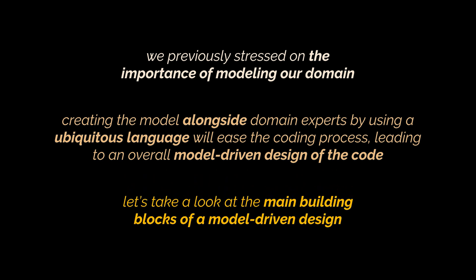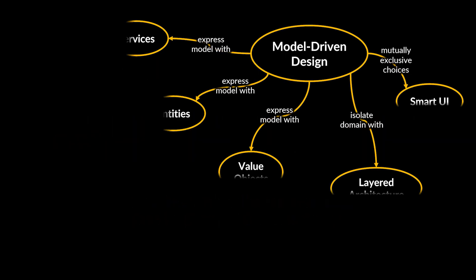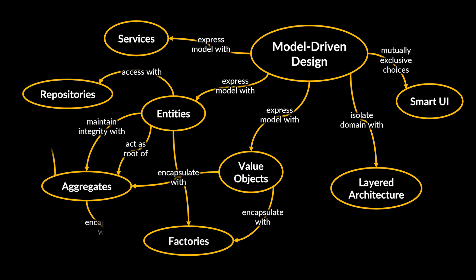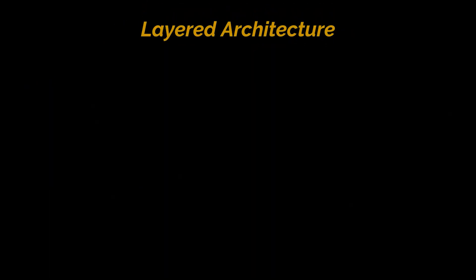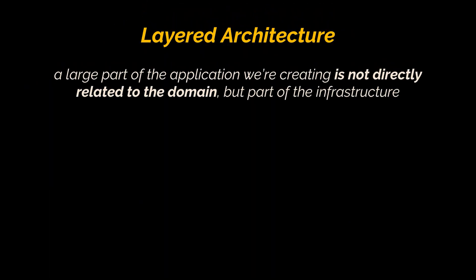The diagram you see presents some of the key elements of object modeling and software design from the viewpoint of domain-driven design. Let's dive into each one of these elements separately. A layered architecture: when we create a software application, a large part of the application is not directly related to the domain.